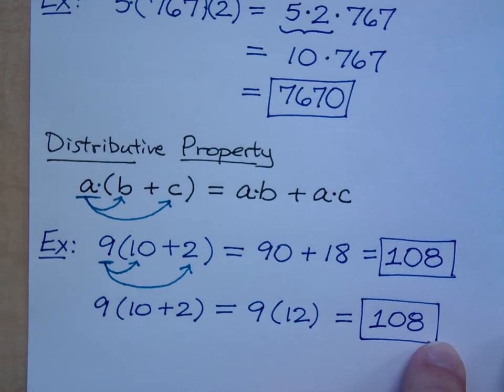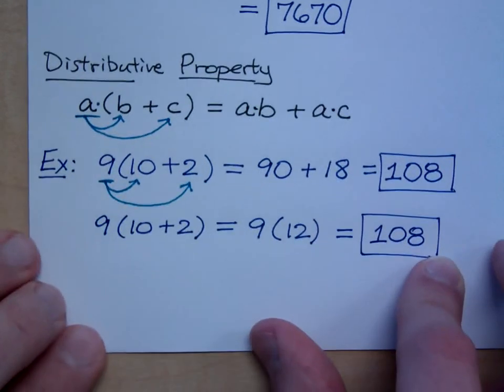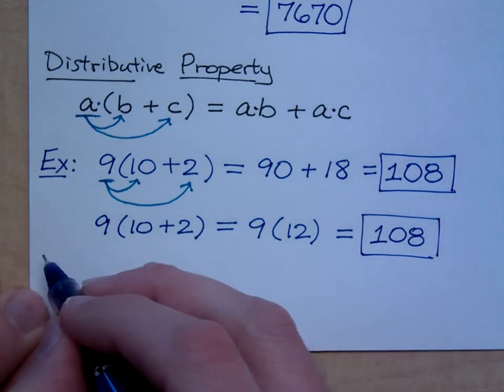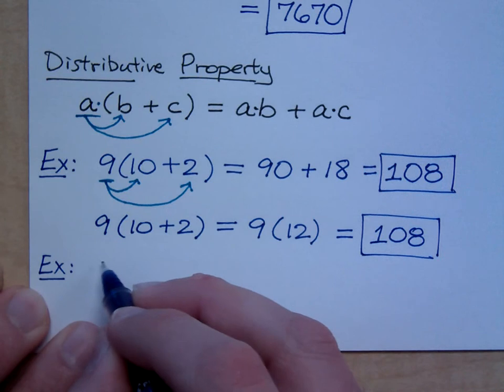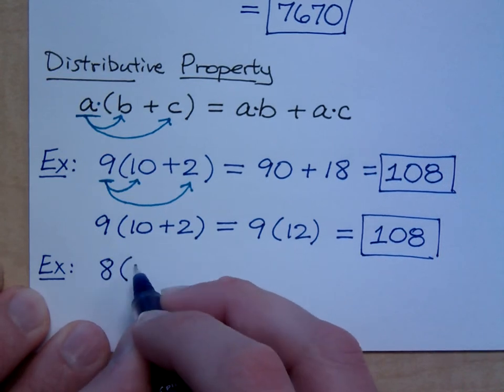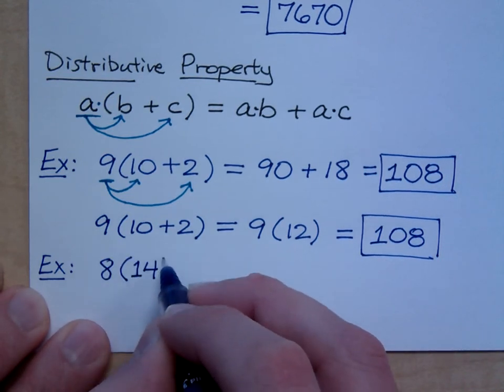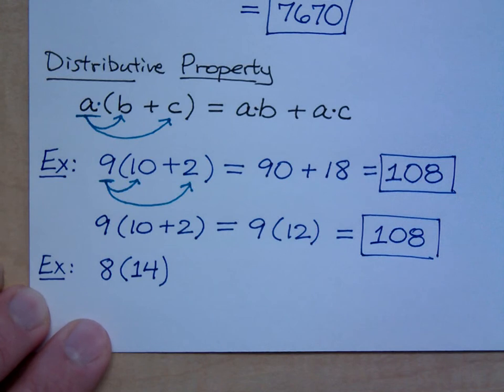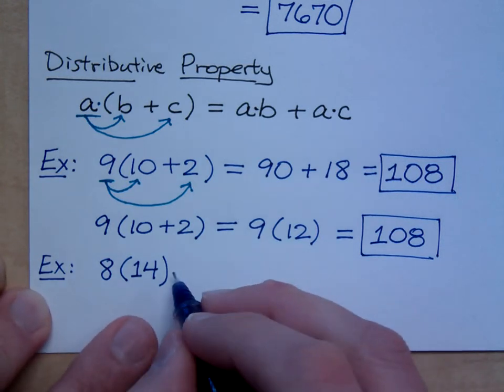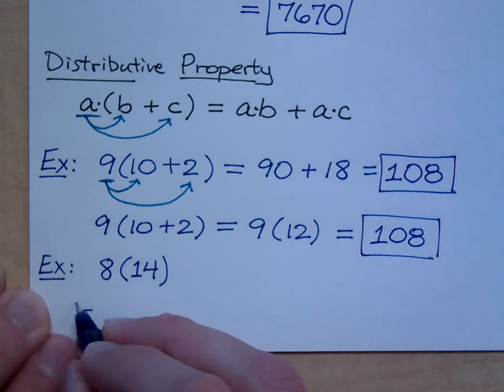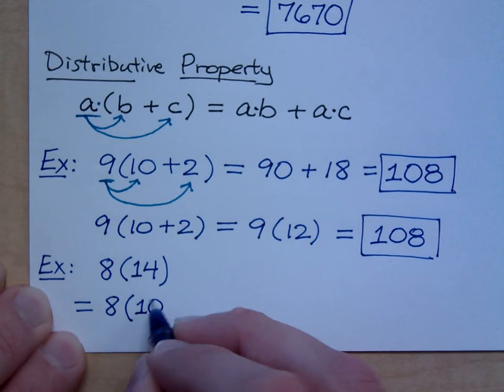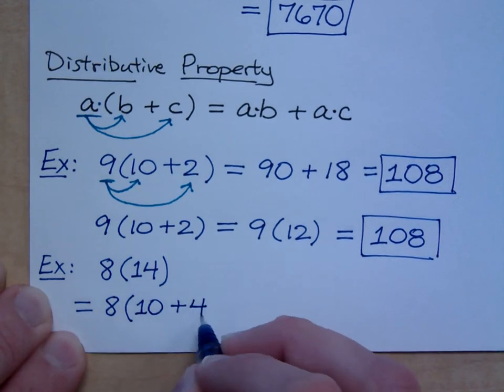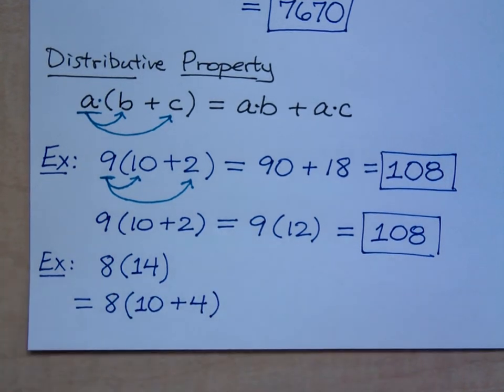You can use this process and actually work backwards a little bit if you want to. For example, if I have 8 times 14, I could do 8 times 14, or I could look at it this way. A lot of times, I'll take 14, and I'll write this as 10 plus 4. Now, why would I do that as 10 plus 4?